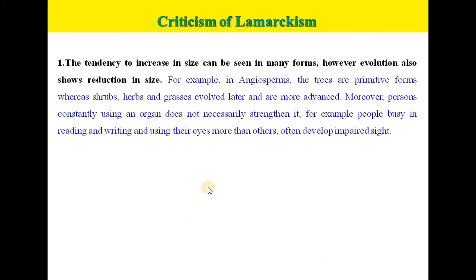What is the criticism of Lamarckism? The first criticism is that the tendency to increase in size can be seen in many forms; however, evolution also shows reduction in size. For example, in angiosperms, the trees are primitive forms whereas shrubs, herbs and grasses evolved later and are more advanced. Moreover, persons constantly using an organ does not necessarily strengthen it — for example, people busy in reading and writing and using their eyes more than others often develop impaired sight.